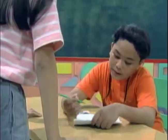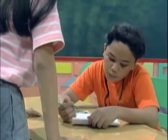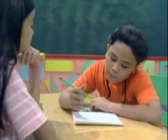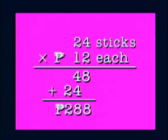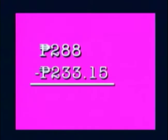To avoid further scolding, they recalculate. Joey sold 24 sticks at 12 pesos each. 24 times 12 equals 288 pesos. They now subtract the capital of 233 pesos and 15 centavos. One of them notes that a decimal digit seems to move unexpectedly.